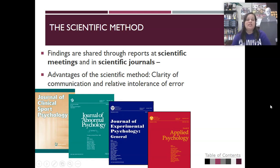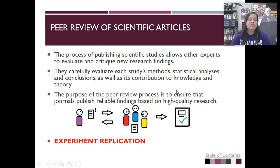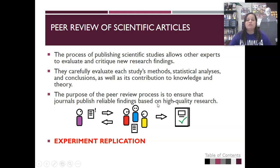Once a person does conduct research and they have findings, it's important for them to share them in scientific journals so that others can benefit from that research. The advantages of the scientific method are that they create clarity of communication, and hopefully it's more resistant to errors. An important part of sharing scientific articles is the peer review process — the idea that before you publish something, other professionals in your field evaluate your study to ensure that the research seems sound and reliable and that the conclusions are valid.